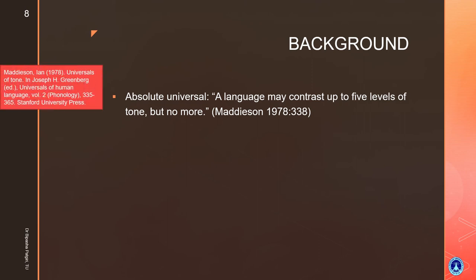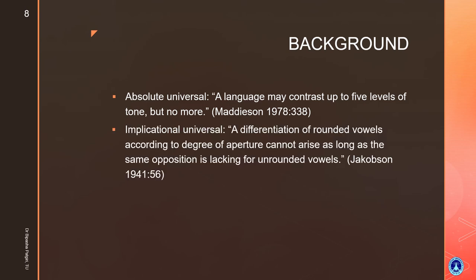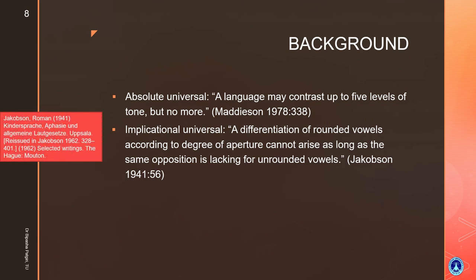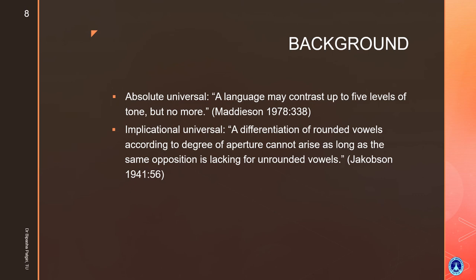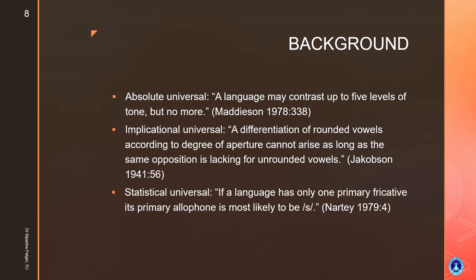Implicational universal is another aspect of markedness. It states that 'a differentiation of rounded vowels according to degree of aperture cannot arise as long as the same opposition is lacking for unrounded vowels.' This statement is taken from Jakobson's 1941 work, which we already encountered in the first video.